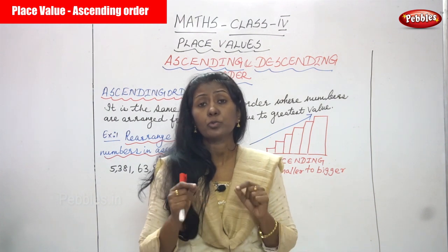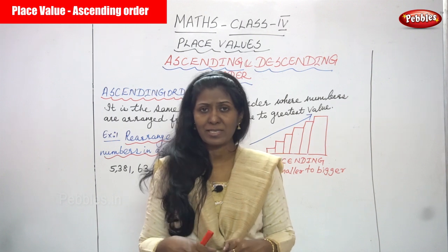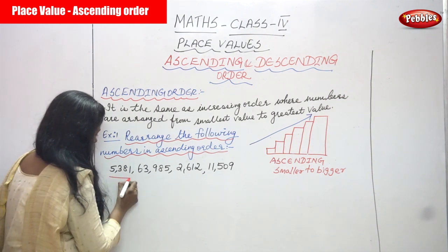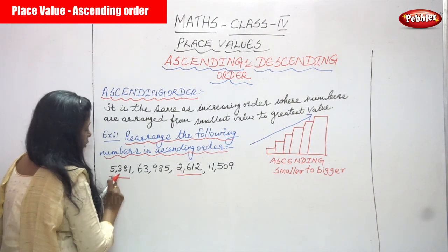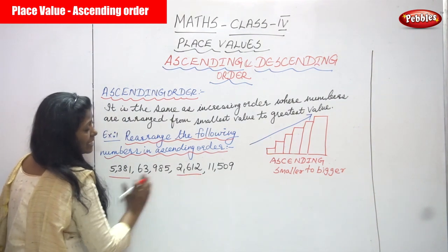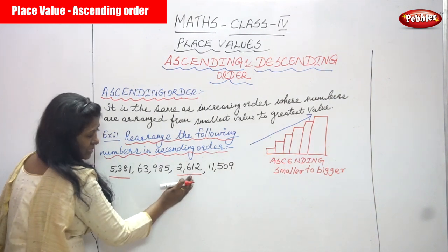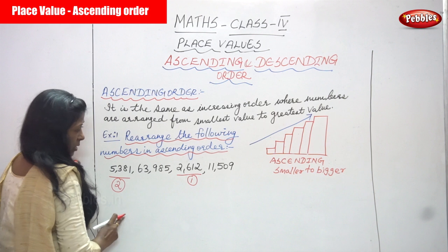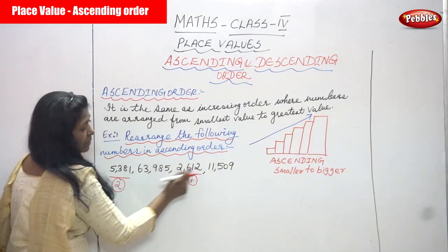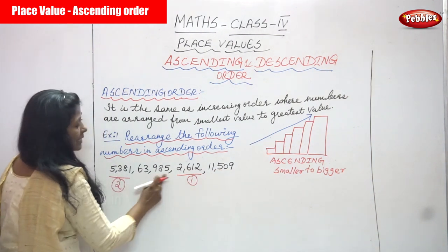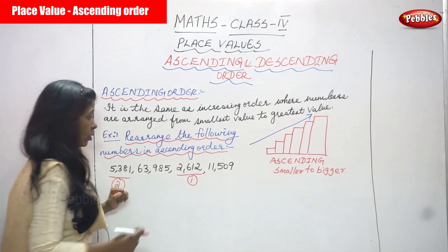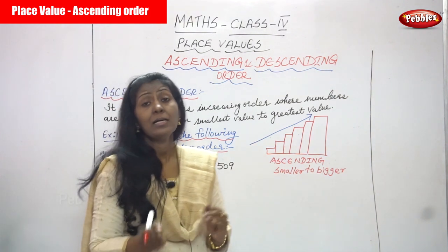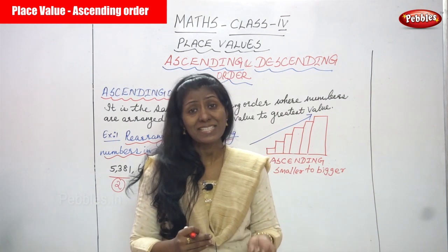Since we have to start with the smallest number, the four-digit numbers are smallest. So compare the two four-digit numbers: five thousand three hundred and eighty-one and two thousand six hundred and twelve. Compare them — which is the very smallest? Two thousand six hundred and twelve is the smallest, so that gets first priority. Five thousand three hundred and eighty-one gets second priority.